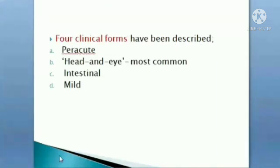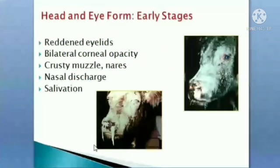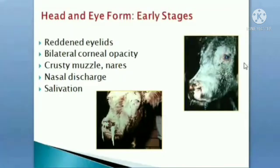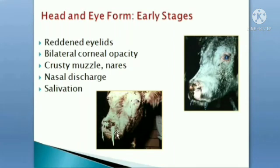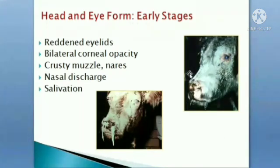There are four clinical forms: peracute form, head and eye form, intestinal form, and mild form. In the head and eye form, there is reddening of the eyelids, bilateral corneal opacity, crusty muzzle and nares, nasal discharge, and salivation.